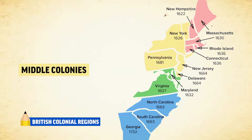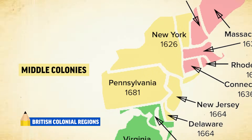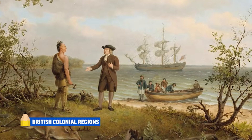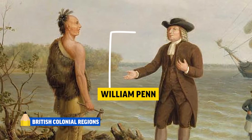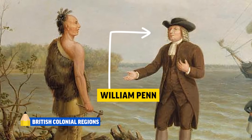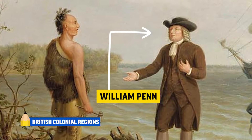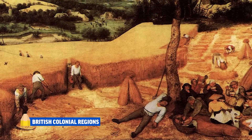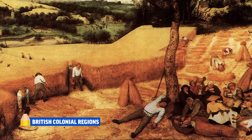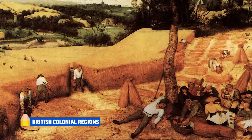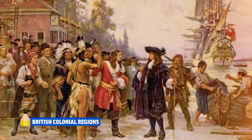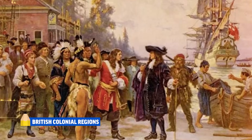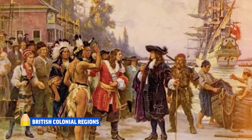Next, the middle colonies of Pennsylvania, Delaware, New York, and New Jersey. Pennsylvania was a proprietary colony founded by William Penn, a Quaker who believed in religious tolerance, friendly relations with Natives, and opposed slavery. Pennsylvania was economically diverse and known as the breadbasket because it grew crops like wheat and barley. The middle colonies were also ethnically diverse, attracting German and Scots-Irish immigrants.